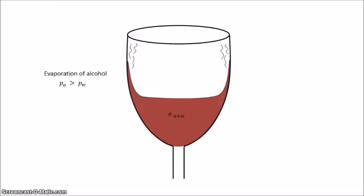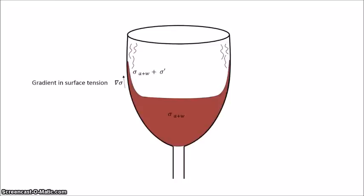Since alcohol has a higher vapor pressure than water, it will evaporate quicker. This results in an increased surface tension in the thin film, as water — the residual — has a higher surface tension than alcohol. This causes a gradient pointed upwards along the thin film. From the stress balance at a free surface equation, we know that a stress will result in the direction of the surface tension gradient.